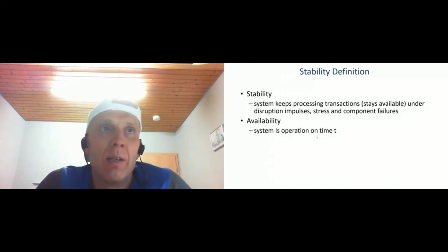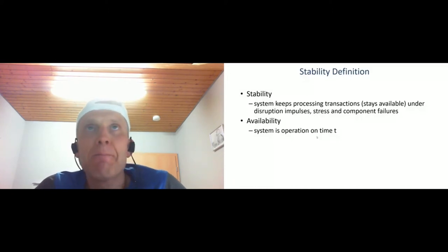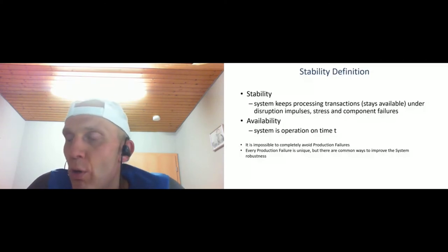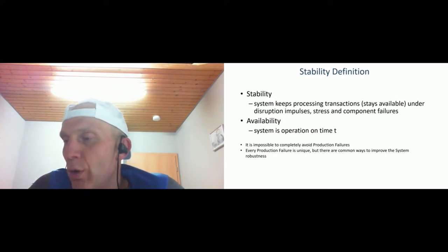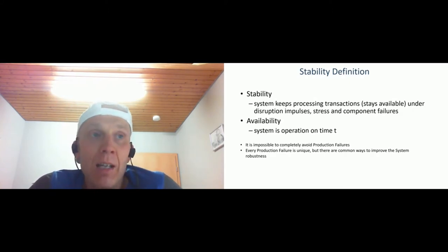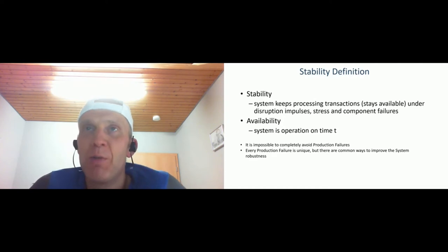Availability is basically a derived term from stability, showing if the system is operational at time t. Of course, as a system is stable, it's also available. Importantly, regardless of how good your quality assurance is — unit tests, integration tests, system tests, load tests — it's not possible to completely avoid production failures. Some problems in production will happen for sure. Every production failure is unique, but there are common ways to improve system robustness.